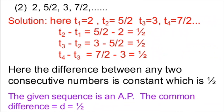Now let us see the second sequence: 2, 5/2, 3, 7/2 and so on. Here the first term is 2, the second term is 5/2, the third term is 3, and the fourth term is 7/2.